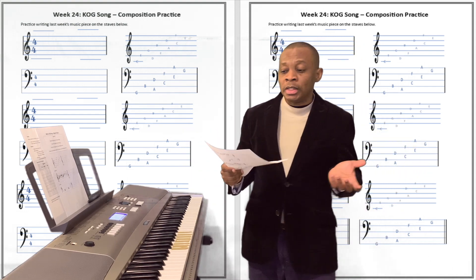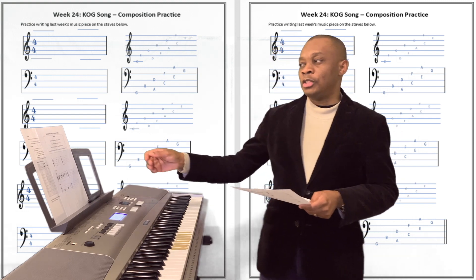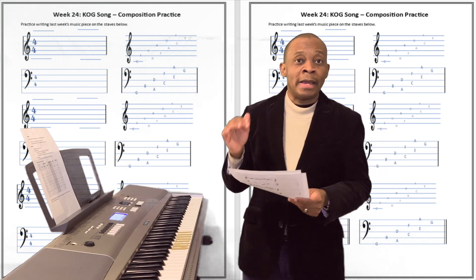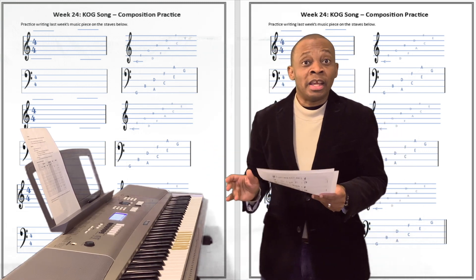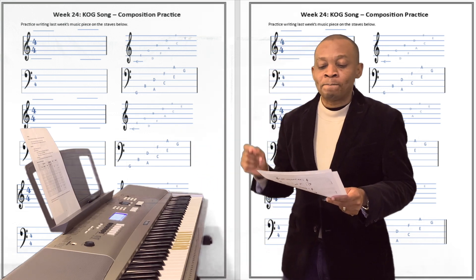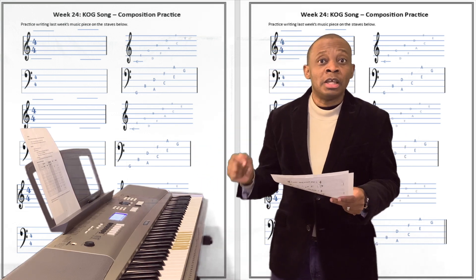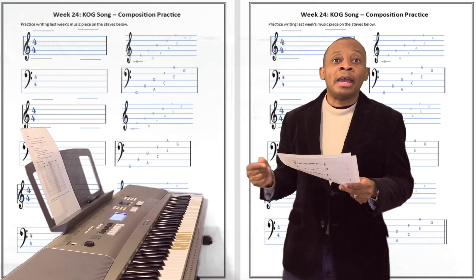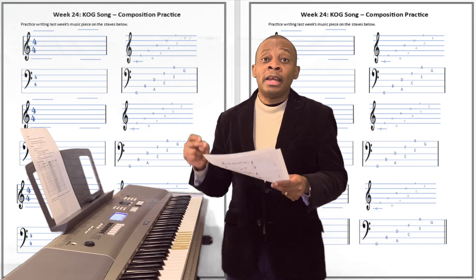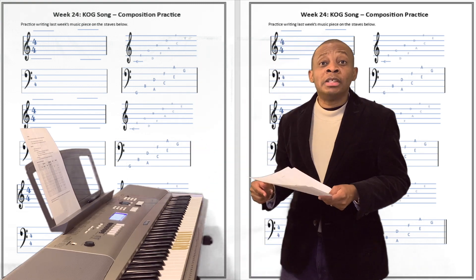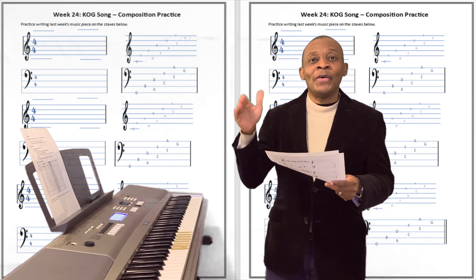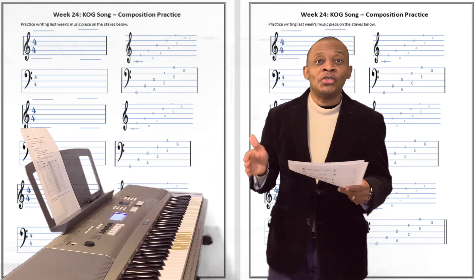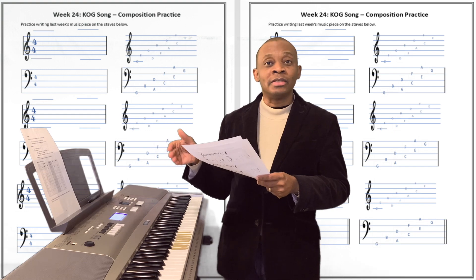Well, how does the song go again? Let's try to sing it together. It's called the KOG song. It goes like this: I have the kingdom, and I have peace. I have the kingdom, and I have joy. I have the kingdom, and I have righteousness. Peace, joy and righteousness. Peace, joy and righteousness.